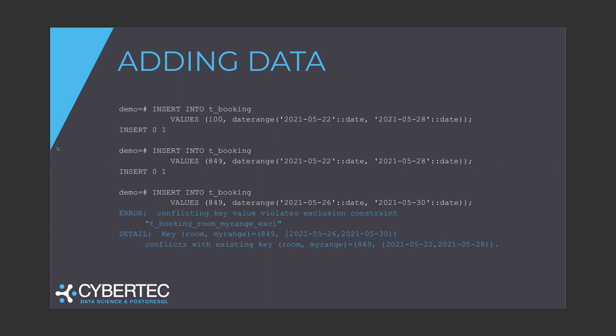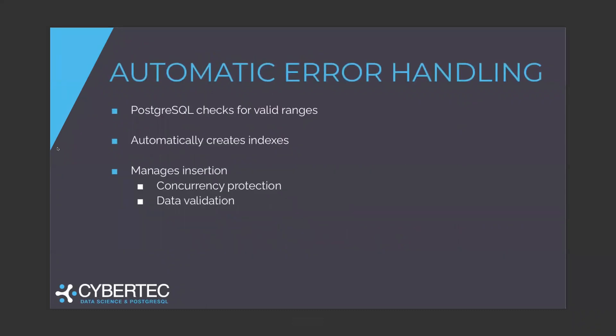As you can see, everything is handled automatically on the database side. It's very easy to use — basically just three lines of code. There's automatic error handling, automatic invalidation. What really happens is that the clause at the end of the CREATE TABLE statement automatically creates a GIST index. The magic is really in the way Postgres handles the GIST index.